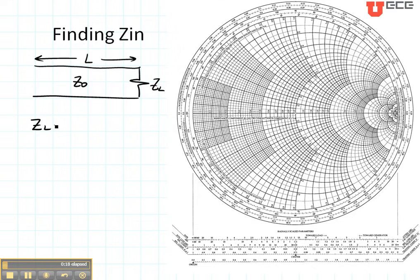Let's say that ZL is 100 plus j100 ohms and that the characteristic impedance is 50 ohms. So in order to plot this on the Smith chart, I'm going to take my load and divide it by my characteristic impedance which gives me 2 plus j2.